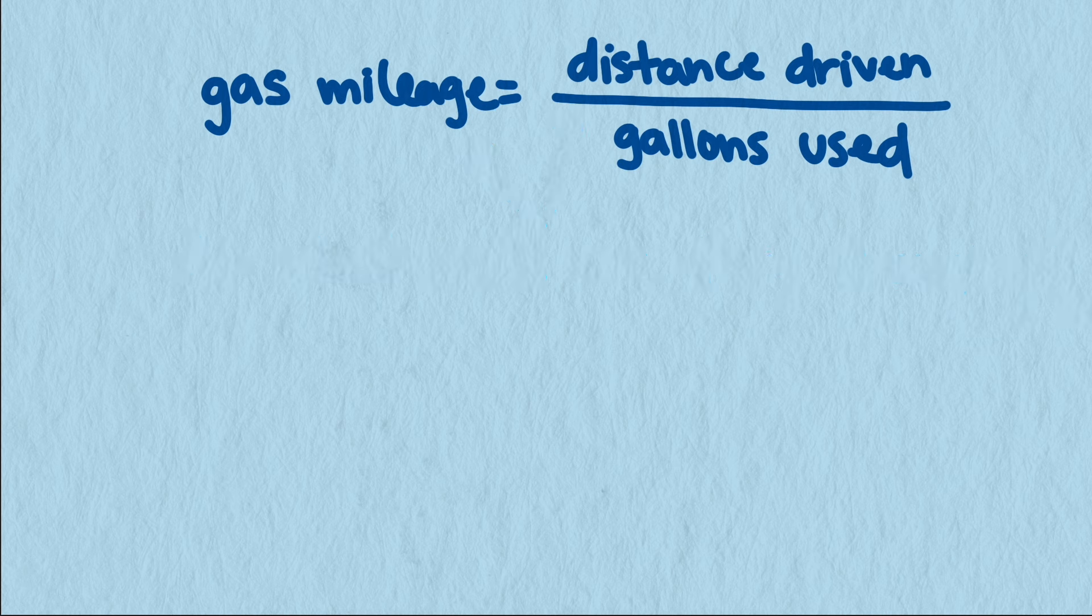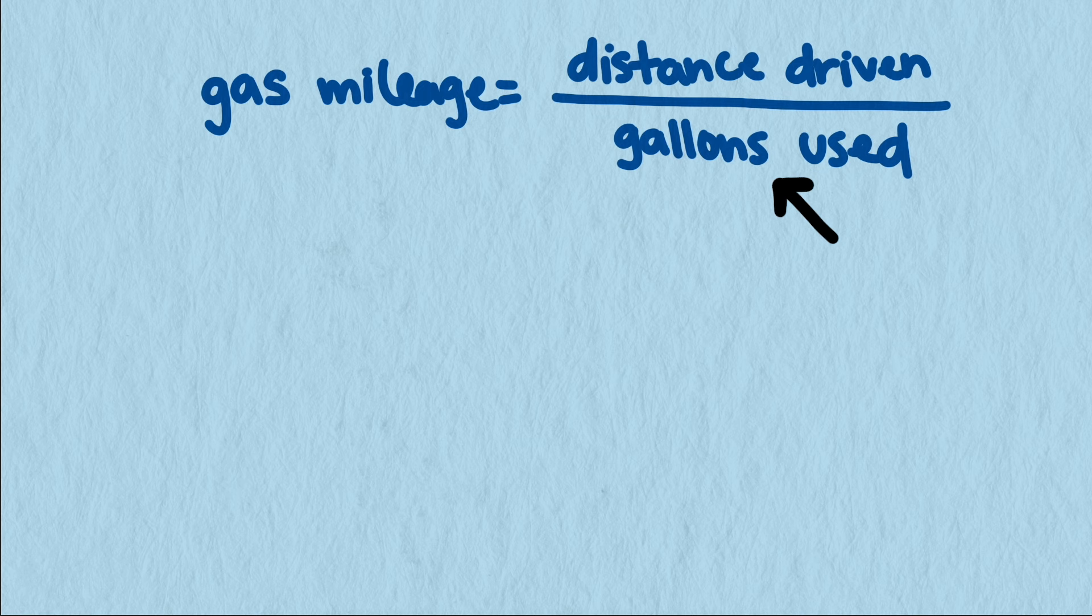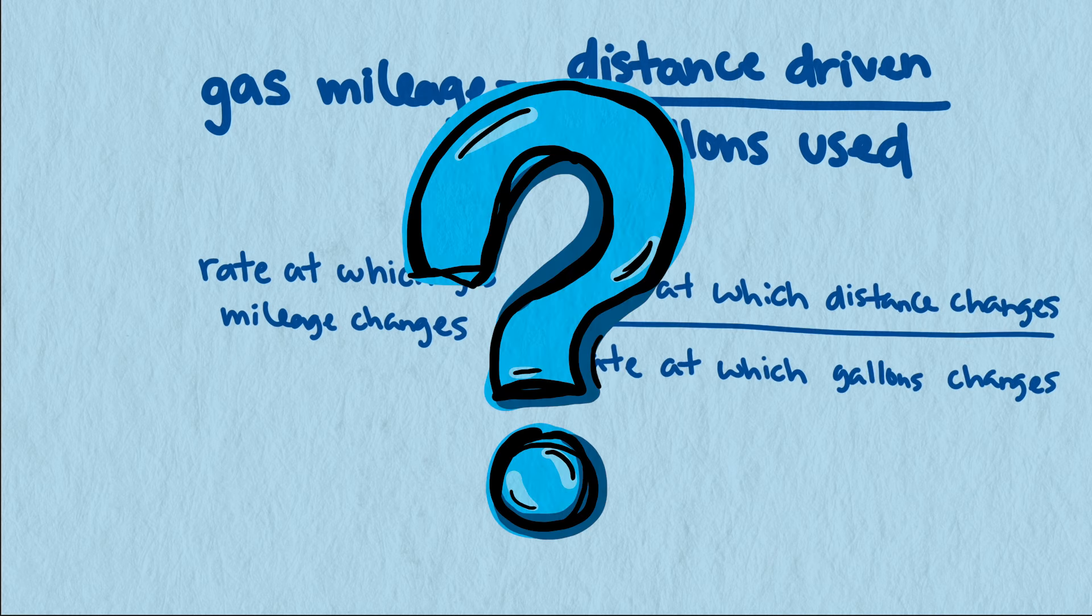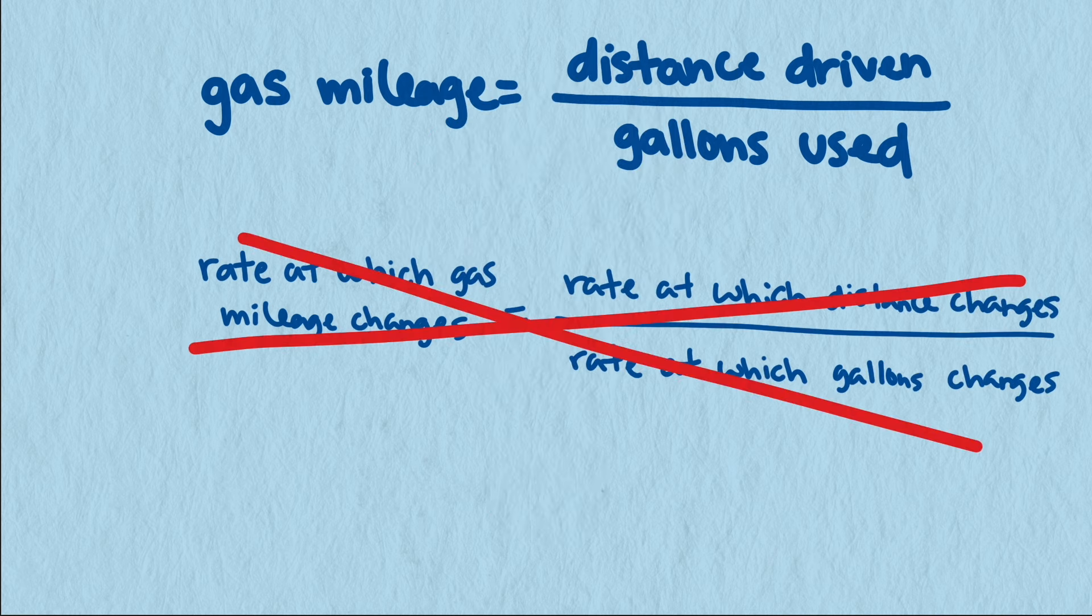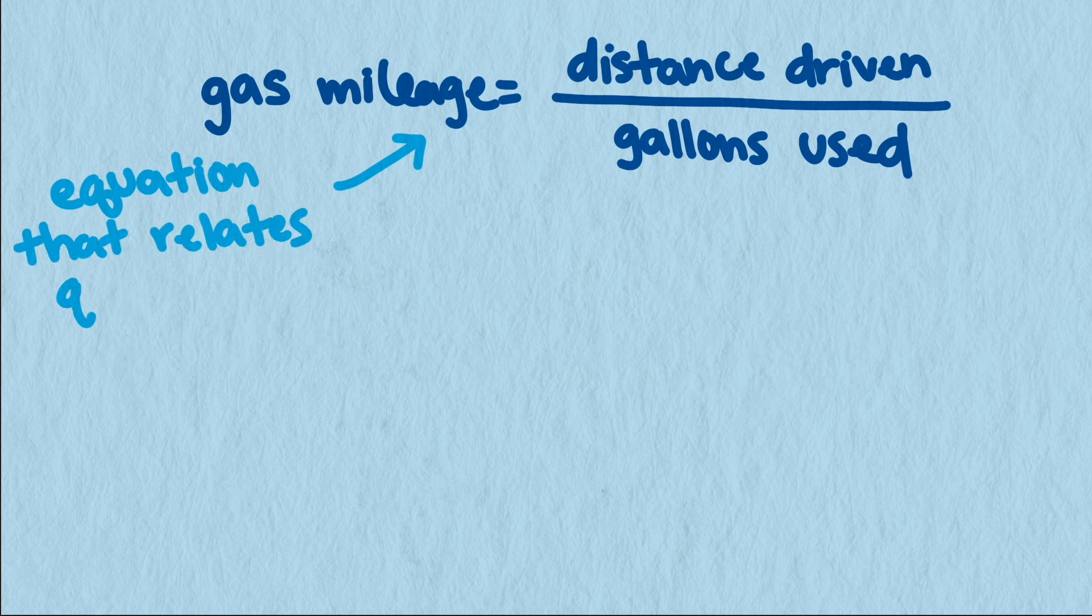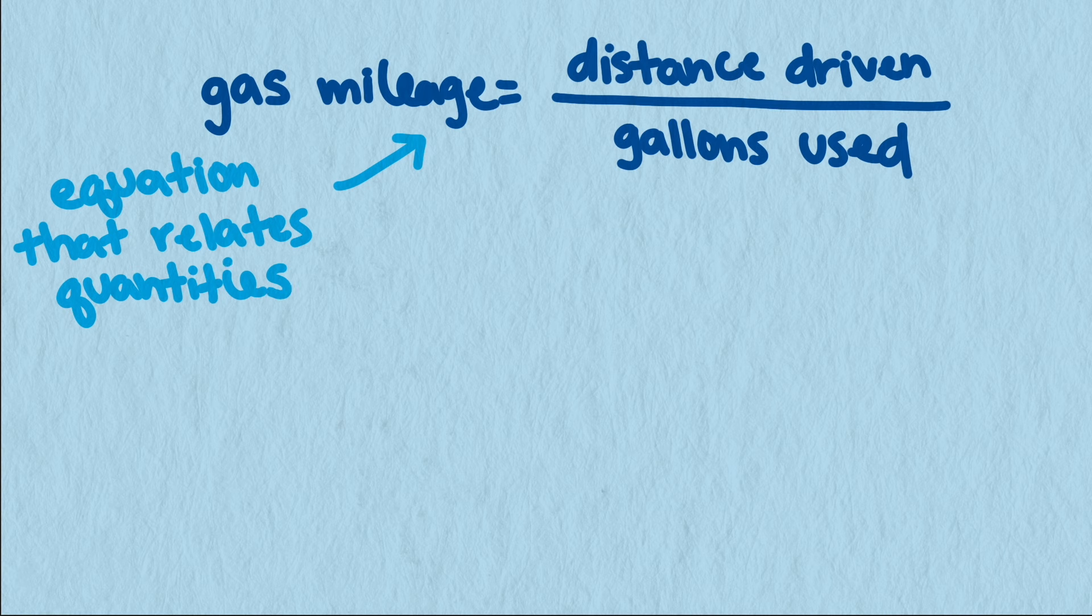A formula for gas mileage is pretty easy. If we know how far we've driven and how many gallons of gas we've used, we divide to find the gas mileage. But this isn't enough to know how the rate that gas mileage changes is related to the speed of the car and the rate that the car burns fuel. We need a new equation. Related rates is the technique that shows us how to find that new equation that relates the rates at which the quantities are changing when we already have an equation that relates to the quantities themselves.